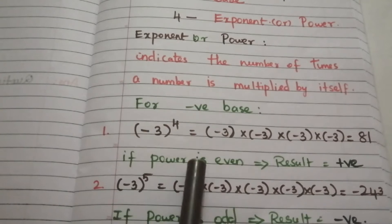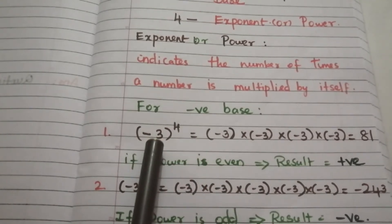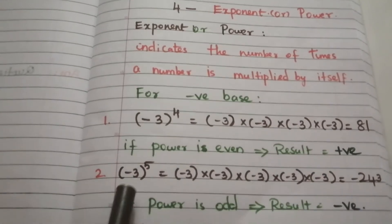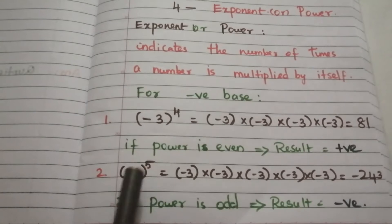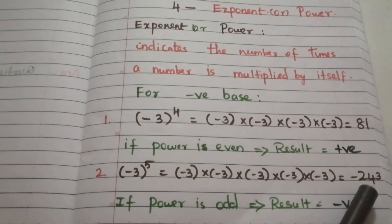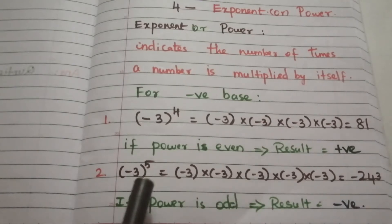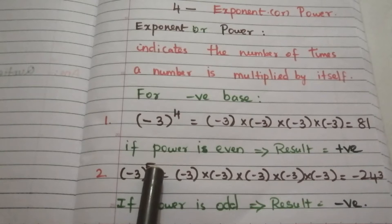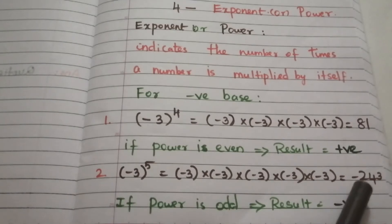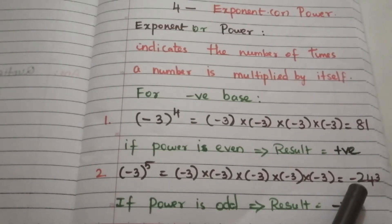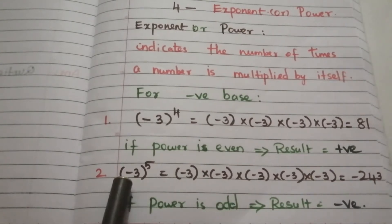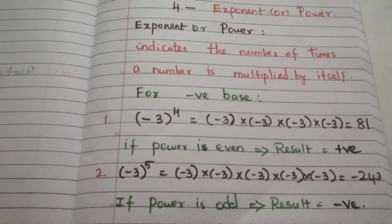If power is even for a negative base, the result is positive. For minus 3 power 5, here minus 3 is multiplied 5 times and the answer is minus 243. Here the exponent is odd for the negative base, so the answer is negative. If power is odd for a negative base, the result is negative.